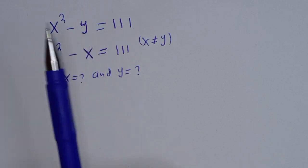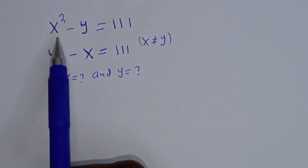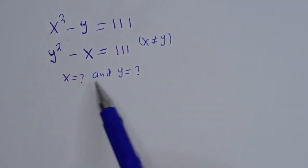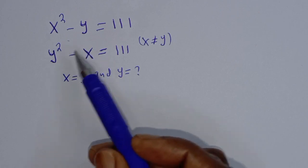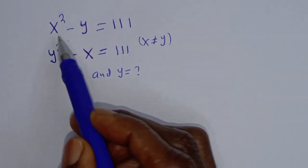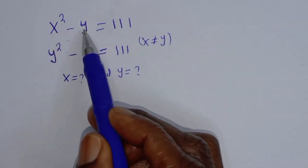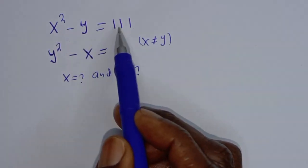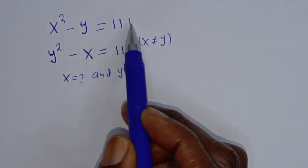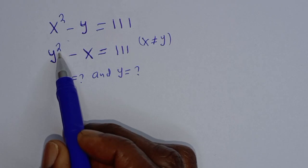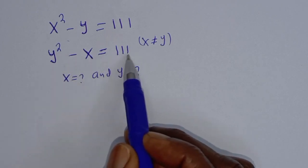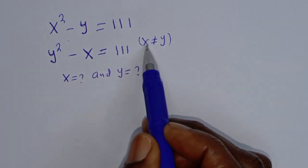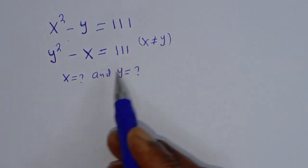Hello, how to solve for x and y from this given nice Math Olympiad problem. x squared minus y is equal to 111, and y squared minus x is equal to 111, provided x is not equal to y.